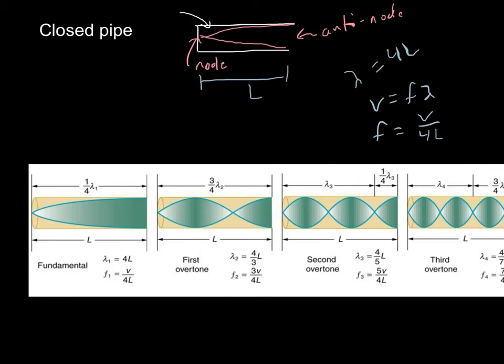So we can make a general equation for any closed pipe that says the frequency of any particular what we call harmonic. So the harmonic is 1, 2, 3, 4, so on and so forth. So the harmonic is just the number. So FN equals NV over 4L, where N is going to be our harmonic number, and for a closed pipe, it's odd numbers, 1, 3, 5, so on and so forth.